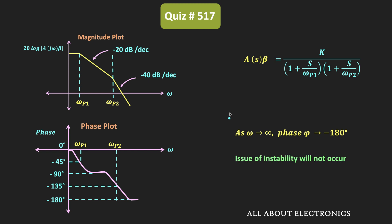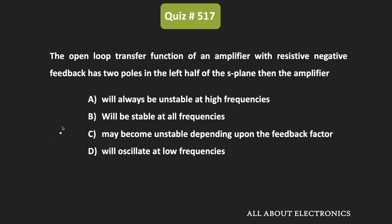The condition for instability is that when the phase equals minus 180 degrees and A times beta is greater than 1, the feedback amplifier is unstable. But in this case, the phase does not reach minus 180 degrees until omega equals infinity. Therefore, for all frequencies, the issue of instability will not occur. Such amplifiers will be stable at all frequencies, and therefore the correct answer for this question is option B.